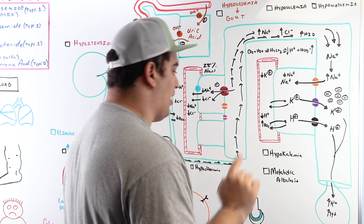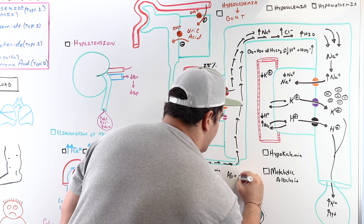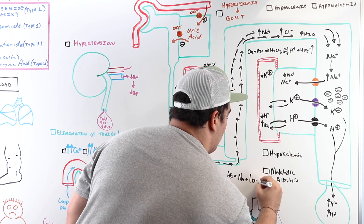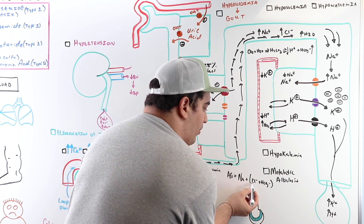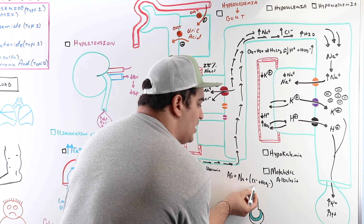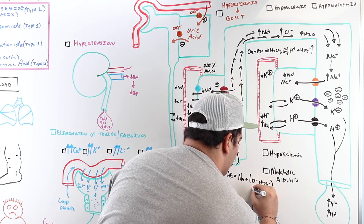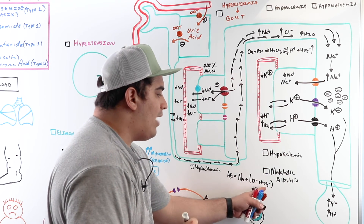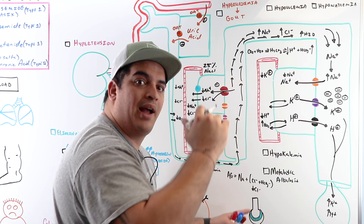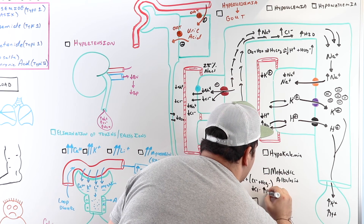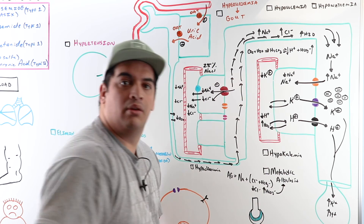Hypochloremia also contributes to metabolic alkalosis. Using the anion gap relationship — sodium equals chloride plus bicarbonate — as chloride drops, bicarbonate rises inversely. So in a patient taking too much loop diuretic, dropping chloride causes bicarbonate to increase, making the blood more alkaline and potentially causing metabolic alkalosis.